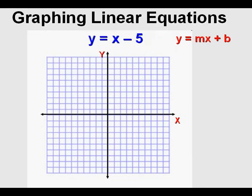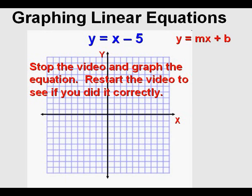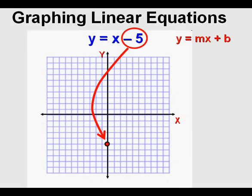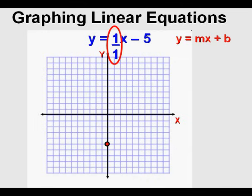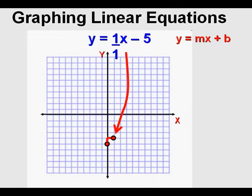Let's look at this last one. Stop the video and graph the equation, then restart to see if you worked it correctly. First we mark the y-intercept at negative 5. Since the x-term is just x, the slope is 1 over 1 because no number next to the variable means 1. We draw a rise of positive 1 and a run of positive 1, marking our second point. Now we have two points to draw that line, and here it is.